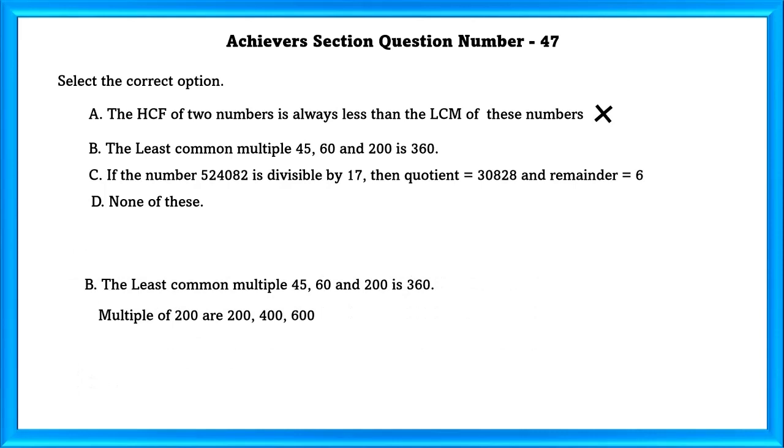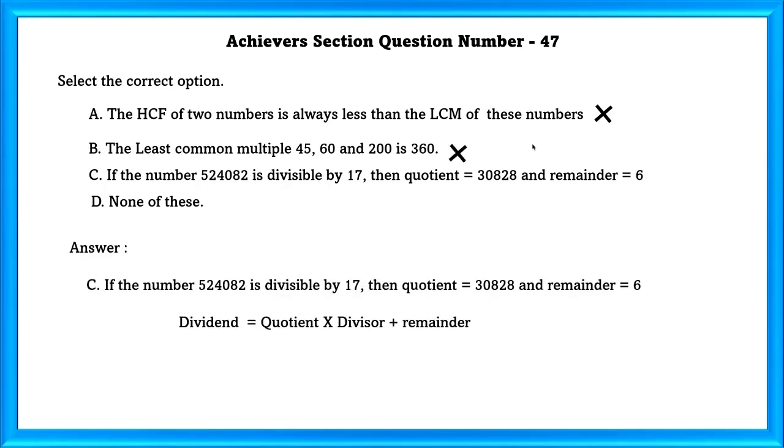Option Number B: The least common multiple of 45, 60, and 200 is 360. First, we'll start by checking the multiples of the larger number, that is 200. Multiples of 200 are 200, 400, and 600. As we can see, there is no 360 in this. So, we can immediately conclude this statement is wrong.